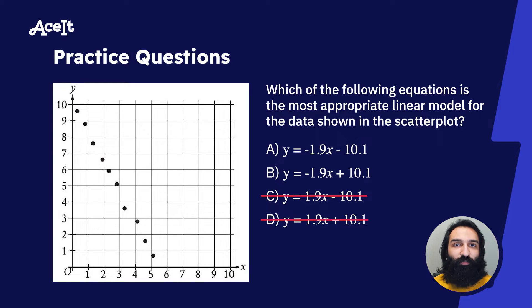From the answer choices that remain, let's look at the y-intercept. The y-intercept from the two remaining answer choices are negative 10.1 and positive 10.1. Which one of these seems correct to you? Positive 10.1 is the correct y-intercept for this graph as it follows the general trend of the data points.